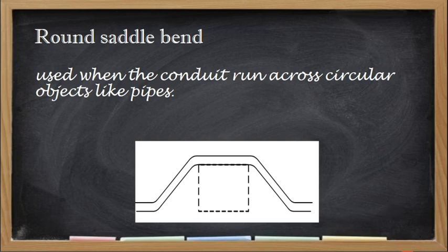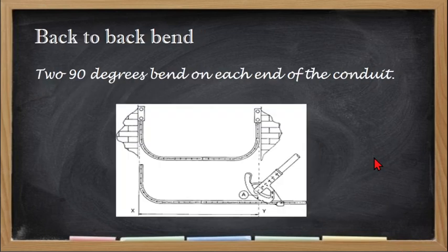The last one is the back-to-back bend. The back-to-back bend has two 90-degree bends on each end of the conduit. It is usually used when we have two boxes and our conduit is running horizontally, but we need to go up vertically on each side. So we need two 90-degree bends, which is called a back-to-back bend.